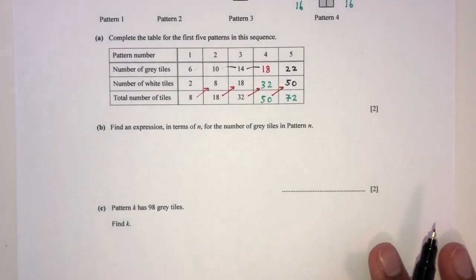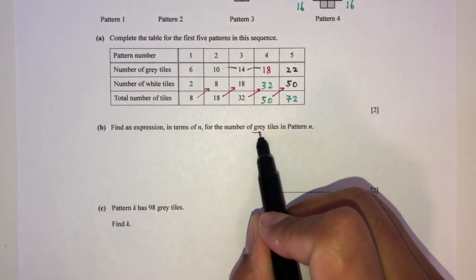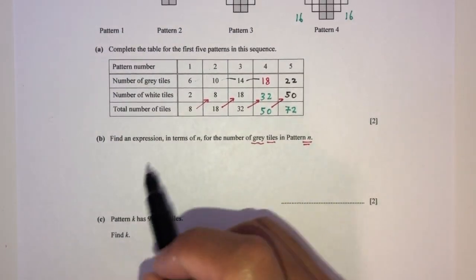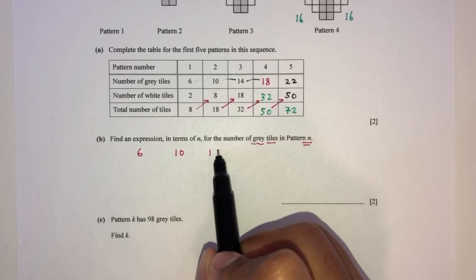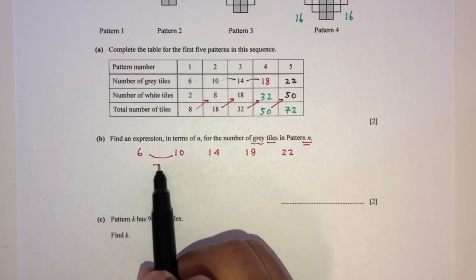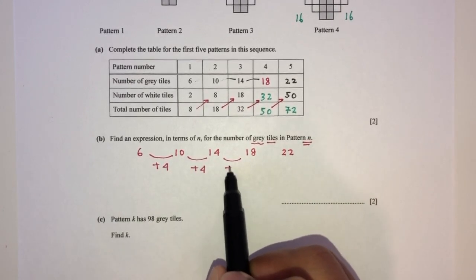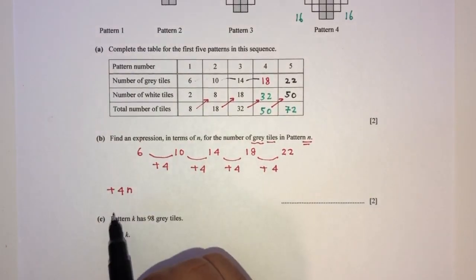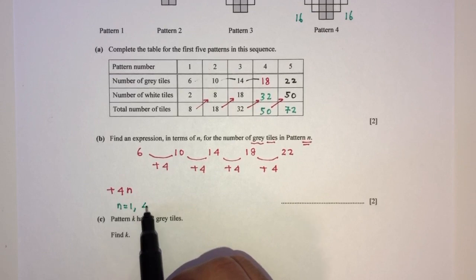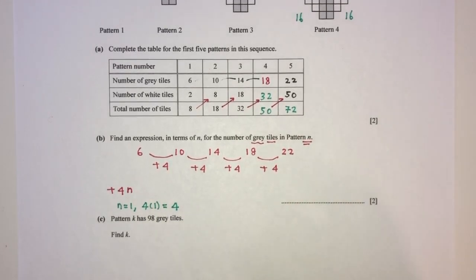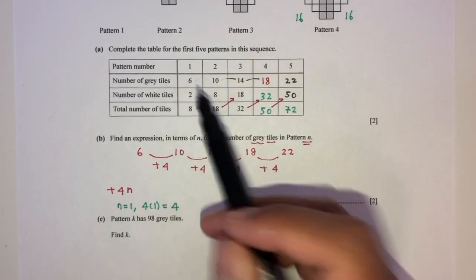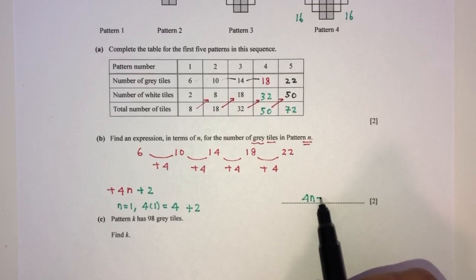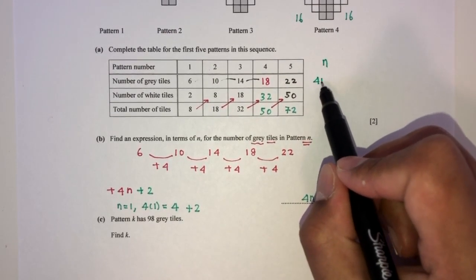For part B, we need an expression in terms of n for the number of gray tiles in pattern n. The gray tile counts are 6, 10, 14, 18, 22 — increasing by 4 each time. Since the common difference is 4, we start with 4n. When n equals 1, 4 times 1 equals 4, but the actual first term is 6, so we need to add 2. Therefore the expression is 4n plus 2 for the gray tiles.